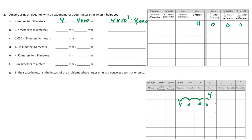Let's do 1.7 meters. I put 1.7 in there and change that to millimeters by adding zeros. What's a little confusing is that decimal no longer exists — it's 1,700 millimeters. We do the same thing: multiply by the third power of 10 to get 1,700.